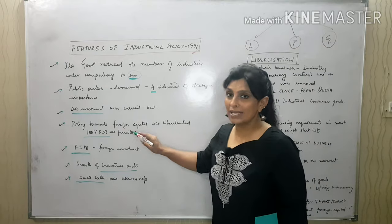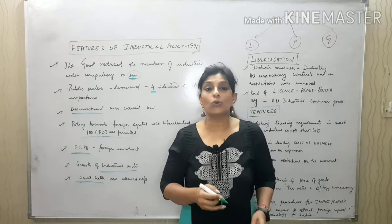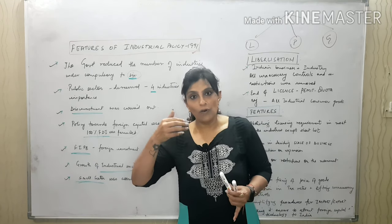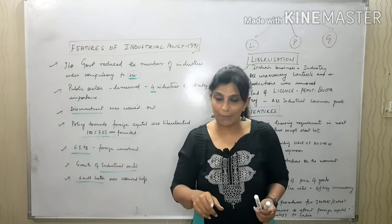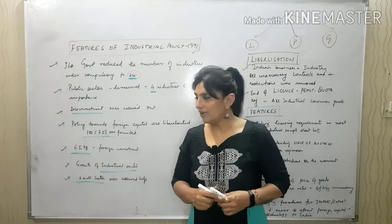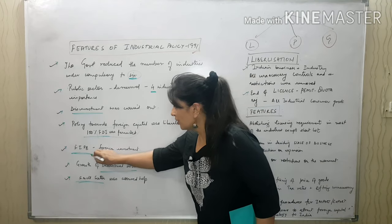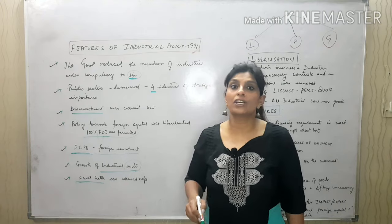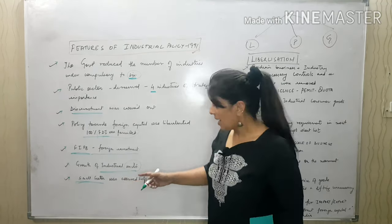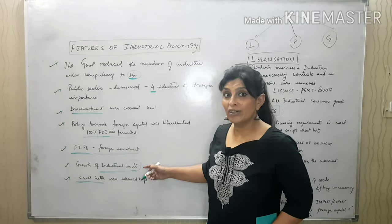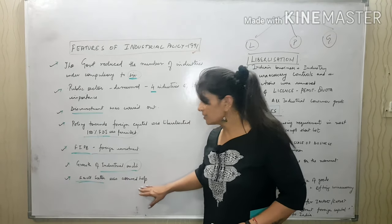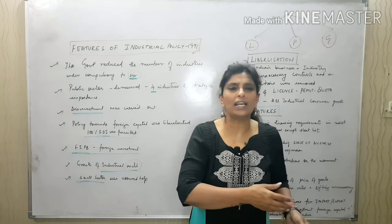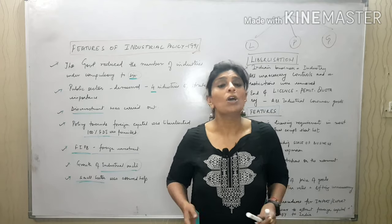Policy towards foreign capital was liberalized — 100% foreign direct investment was permitted. You may recall that in 1977, the Janta party drove out foreign companies like IBM and Coca-Cola. In 1991, these companies were re-invited and 100% FDI was allowed. A Foreign Investment Promotion Board was set up to invite foreign companies to invest in India. More initiative was taken for the industrial sector, covering primary, secondary, and tertiary sectors. Small-scale sector was assured help, NSIC was set up, and DICs were established.